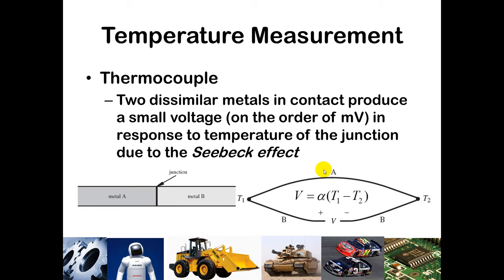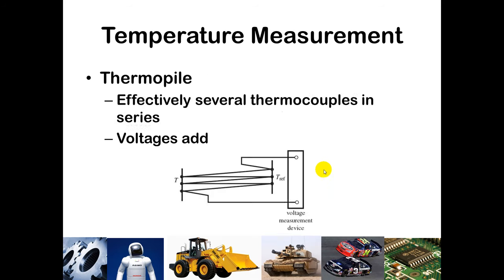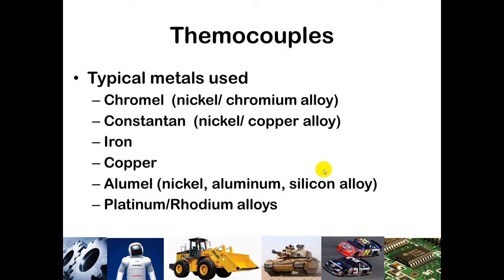A thermocouple is another way temperature is measured, also relying on two dissimilar metals. They can produce a very small voltage at the junction of those two metals at different temperatures — this is known as the Seebeck effect. Because this voltage change is very small, usually on the order of millivolts, we typically arrange multiple thermocouples in series in what are called thermopiles, so the voltages add together just like stacking batteries. Thermocouples are made from many different kinds of metals and alloys, with nickel being commonly used.